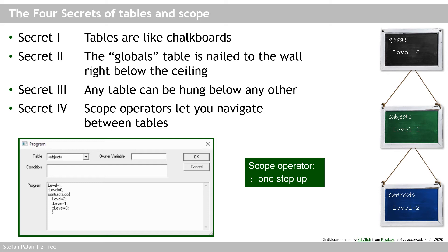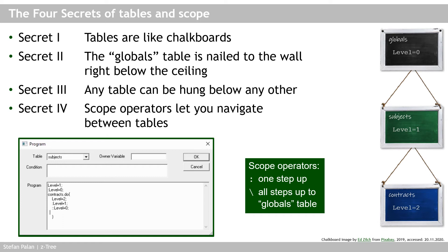Using multiple colons can get tedious, especially when accessing the globals table — which is often the second most important table after subjects. So Z3 offers a second scope operator: the backslash. The backslash is your shortcut to the globals table — it always takes you all the way to the top chalkboard, the one nailed solidly to your wall. Using the backslash scope operator, you can in one step directly modify a variable in the globals table.